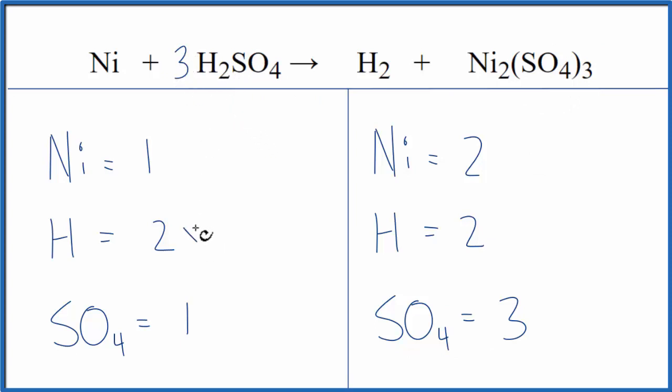So we have two times three. That gives us six. And then we have one sulfate times three. That'll give us three sulfates. So the sulfates are balanced. Let's balance the hydrogens. We have six here and two here. So two times three. That'll give us six. So those are balanced.